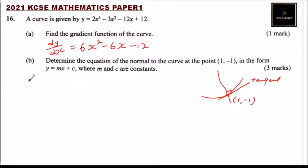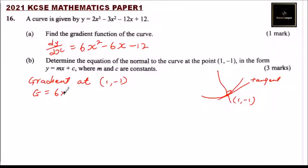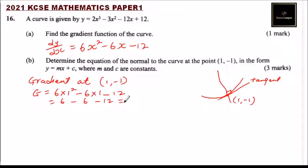We need to find the gradient of the tangent at (1, -1). The gradient dy/dx equals 6 multiplied by 1² minus 6 multiplied by 1 minus 12. This gives 6 - 6 - 12, which equals -12. So the gradient of the tangent at that point is -12.